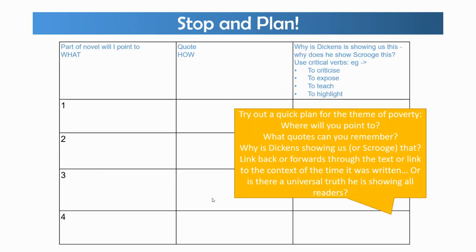One way that you could revise is to prepare plans for the different themes in the book. I've drawn out a grid here and I'm going to try and think of at least three — four would be better — different parts of the novel that relate to that theme, a quote for each one, and trying to interpret why Dickens has put that bit in there and what it tells us.